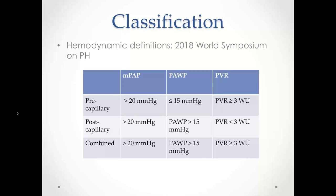In a typical pre-capillary hemodynamic profile, you're going to see a wedge pressure less than 15 and pulmonary vascular resistance greater than or equal to 3 Wood units. In a post-capillary profile, you'll see mean PA pressure greater than 20 but wedge over 15 and PVR less than 3. In a combined pre- and post-capillary profile, you'll again see mean PA pressure over 20, a wedge over 15, and PVR greater than or equal to 3 Wood units.